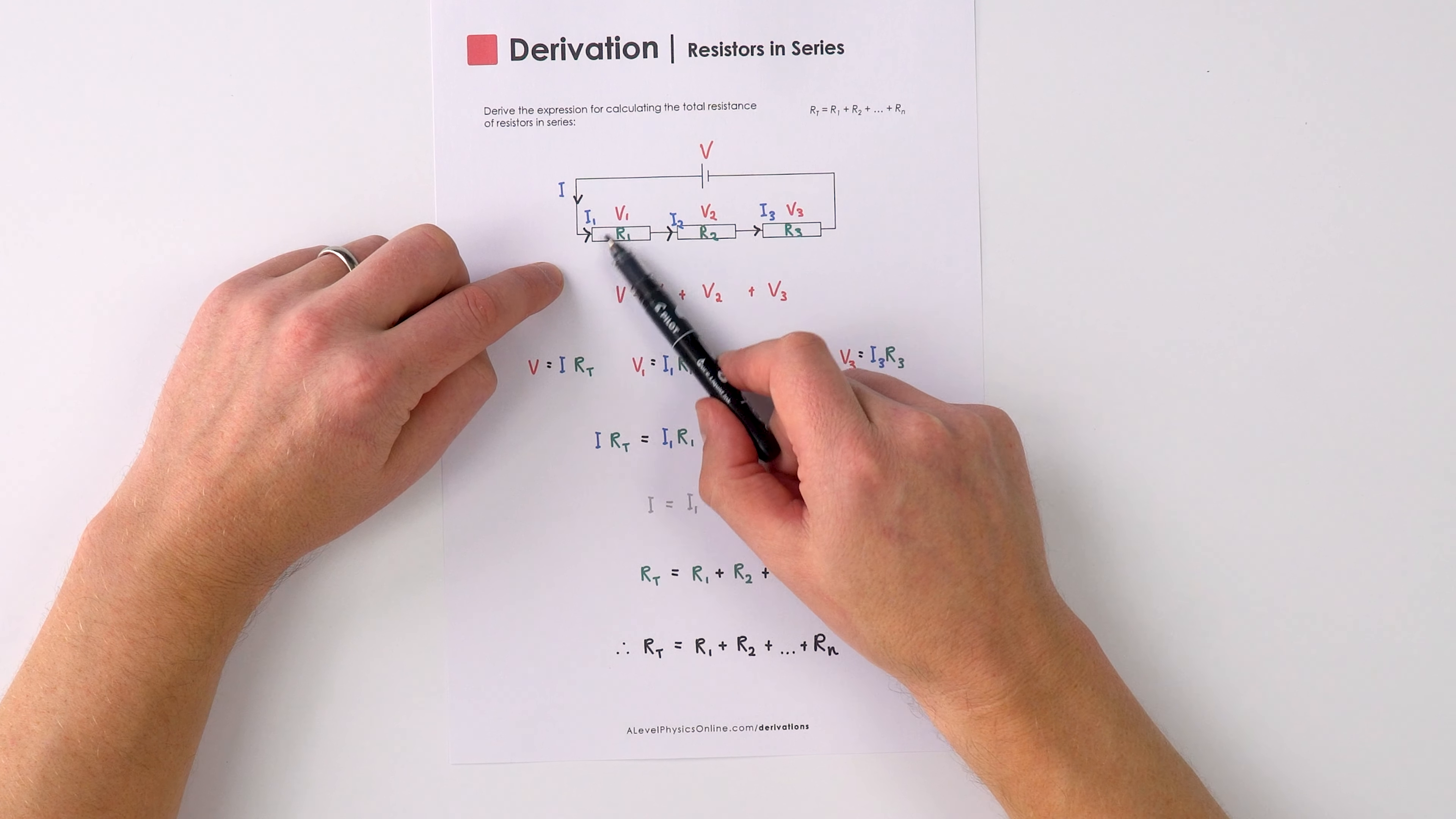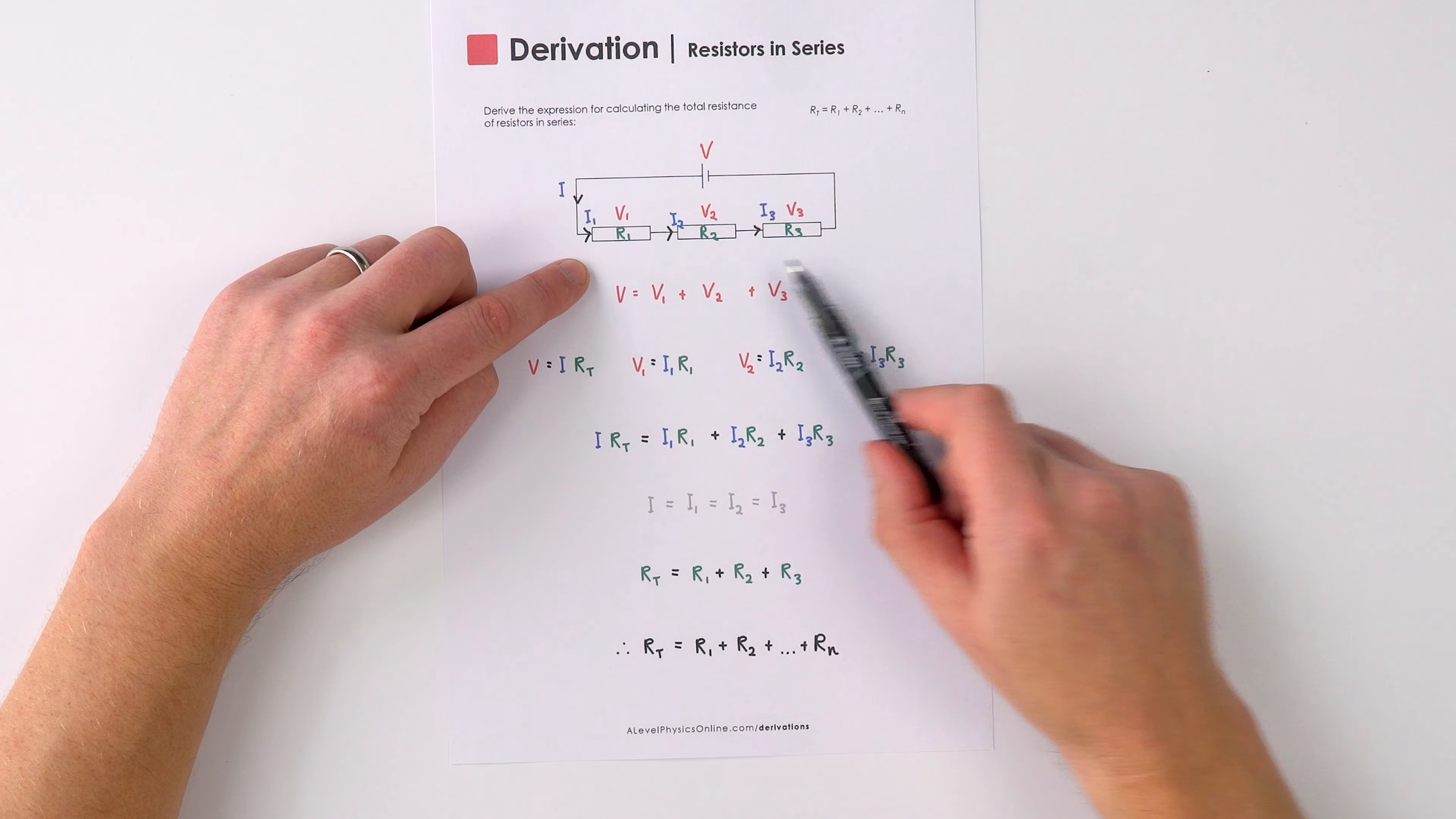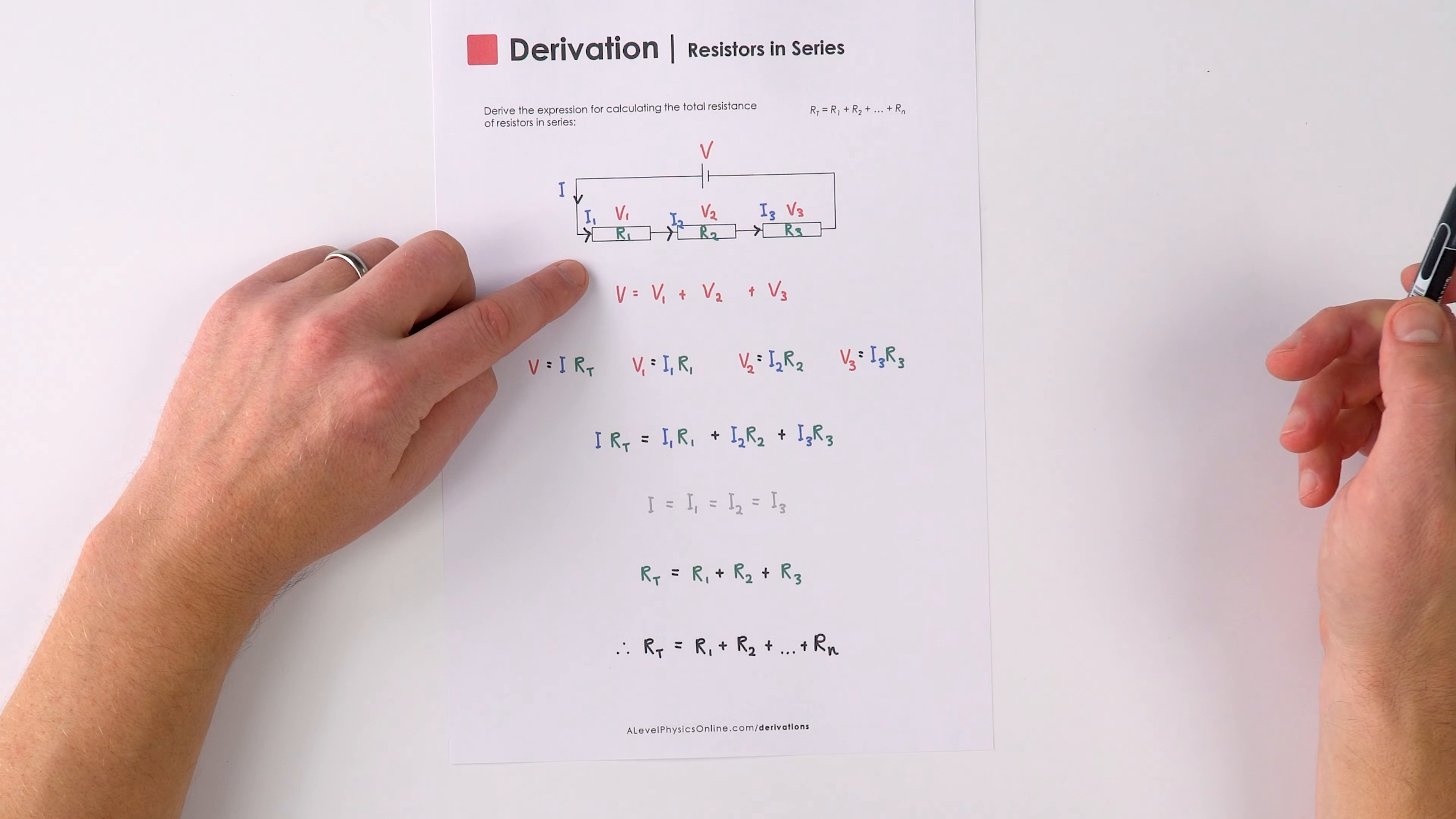We can also look at this resistor and say that V1 is equal to I1 times R1, and we can do the same with these two resistors as well.